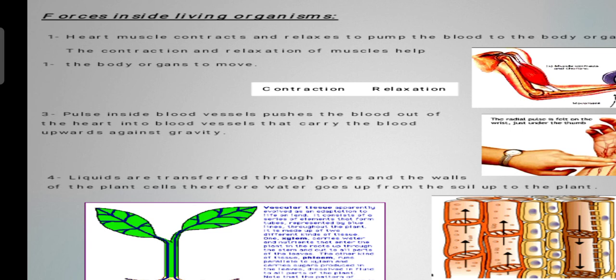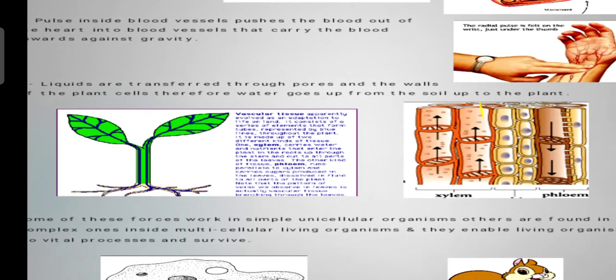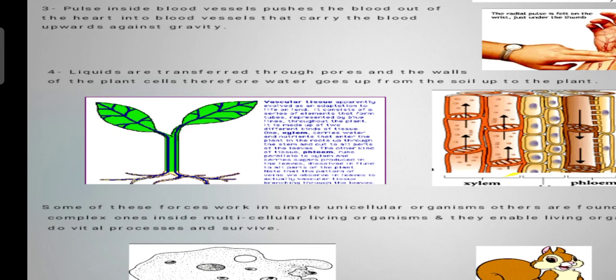The blood vessels carry the blood upward against gravity inside our body. Number four, liquids are transferred through pores in the wall of plant cells. Therefore, the water goes up from the soil to the plant.